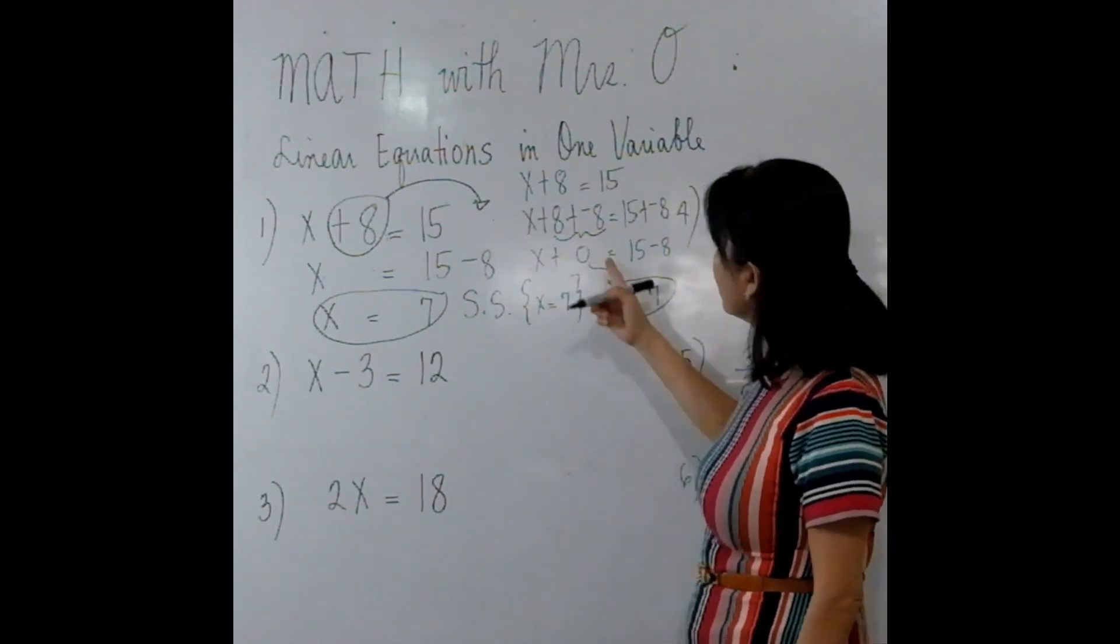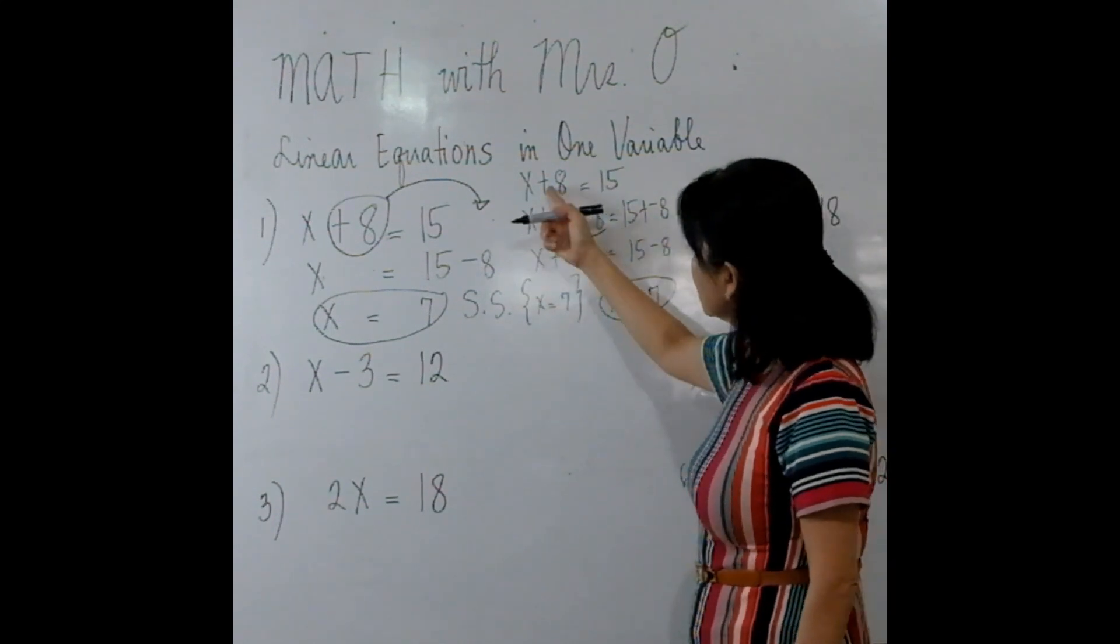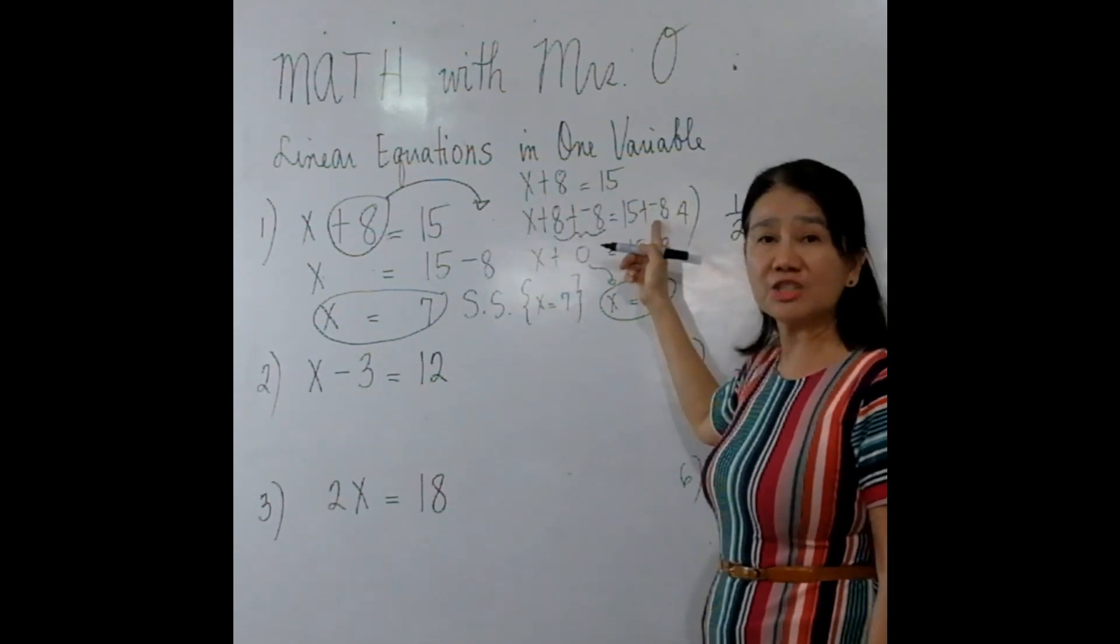That's it. X + 0 is X equals 7. See, you'll get the same answer. So instead of adding negative 8 to both sides, you can just transpose this to the other side by changing the sign.